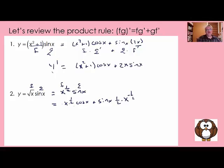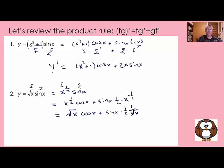Now we rewrite it. x to the 1 half is square root of x, so I put it back as a radical times cosine of x, plus sine of x times 1 half. Since x to the minus 1 half is 1 over square root of x, sine of x ends up in the numerator and 2 and square root of x end up in the denominator. So this is square root of x cosine of x plus sine of x over 2 square root of x. That's the derivative.